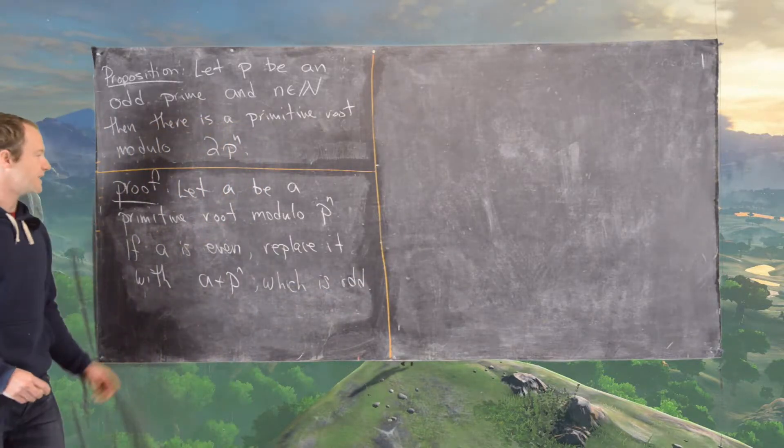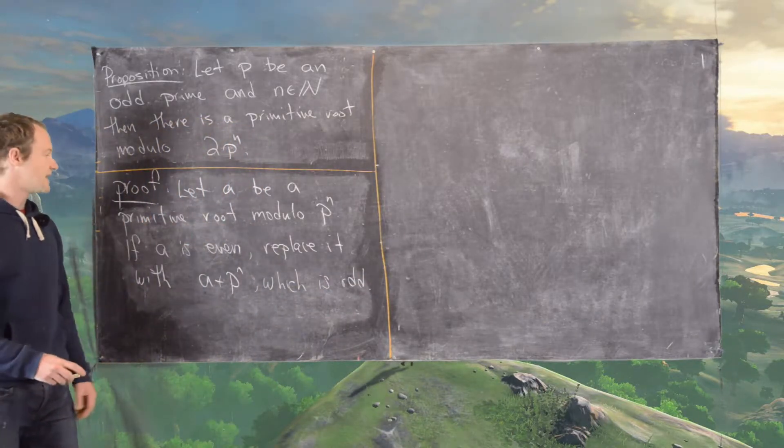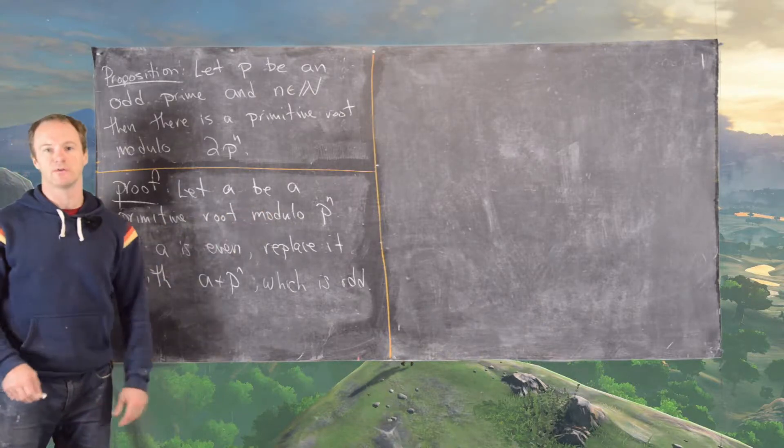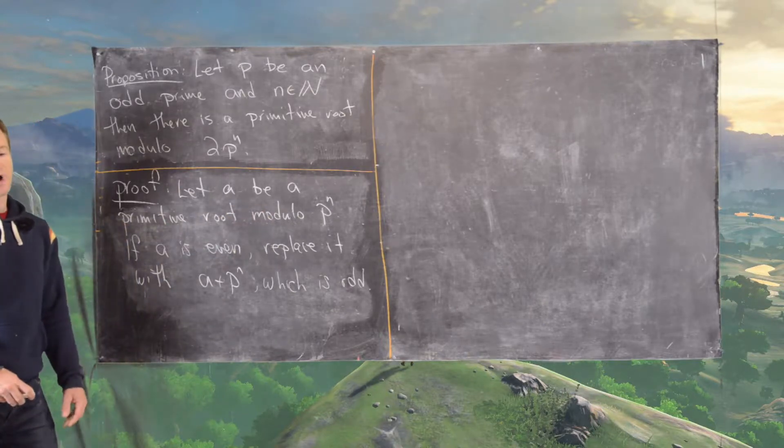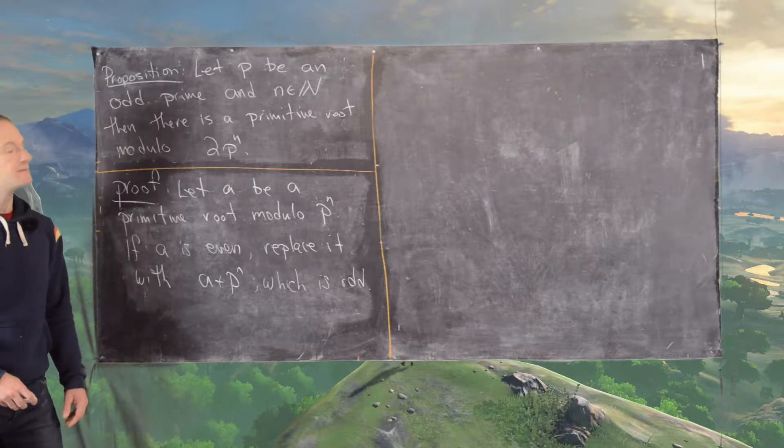In other words, we are assuming that a is not only a primitive root mod p^n, but it is an odd primitive root mod p^n.